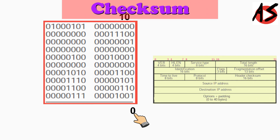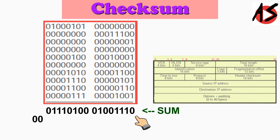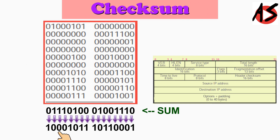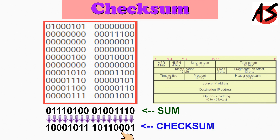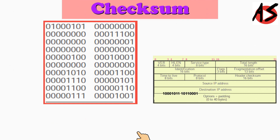Similarly, we add all the bits and get a 16-bit sum. If we get more than 16 bits in the summation, the additional bits are wrapped around to produce the sum. Now the sum is complemented — all 0s change to 1s and all 1s to 0s — to produce the checksum. This checksum result is then inserted into the checksum field.